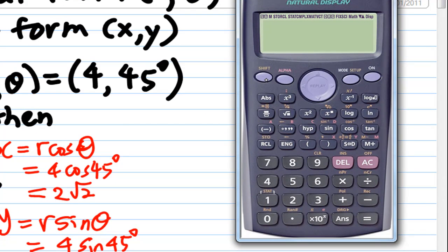I'm going to press shift REC, means rectangular form. R is equal to 4, so I press 4, then shift comma. The direction θ is 45 degrees, so I press 45, close the bracket, and then press equal.